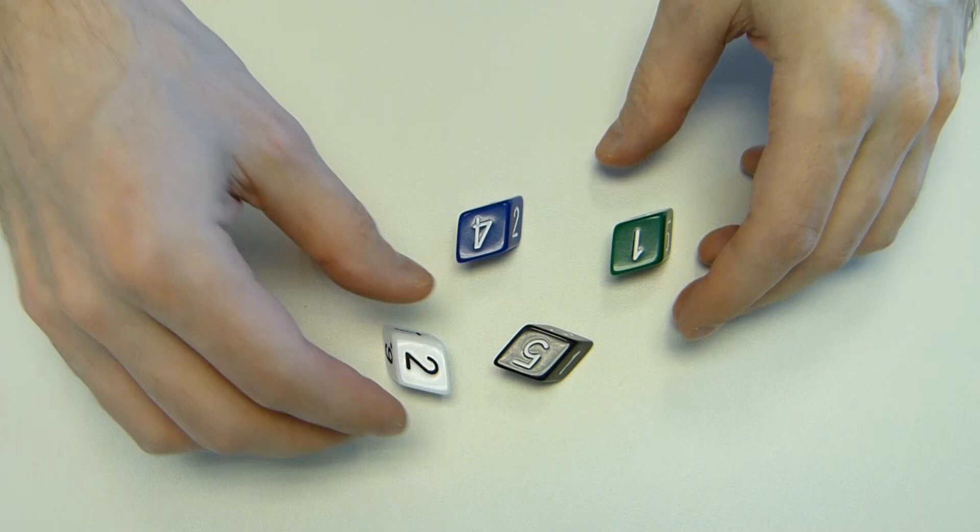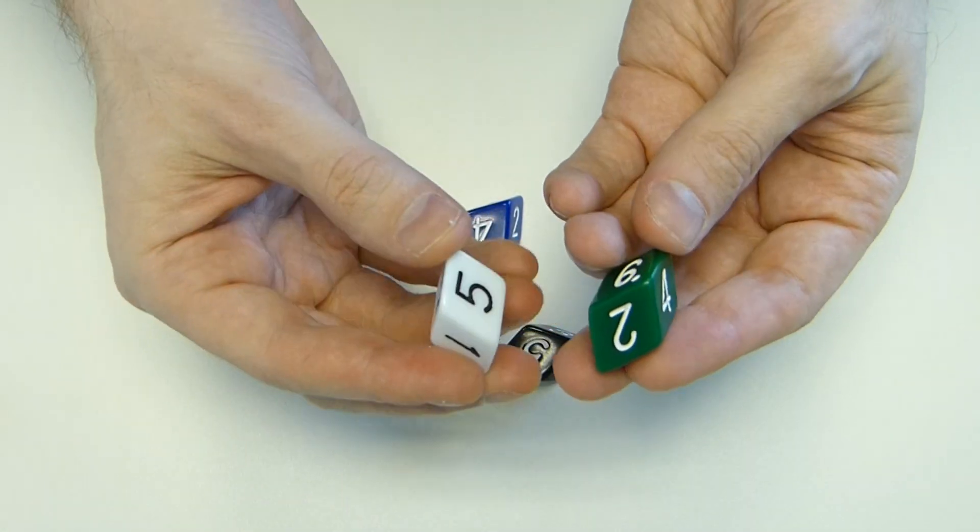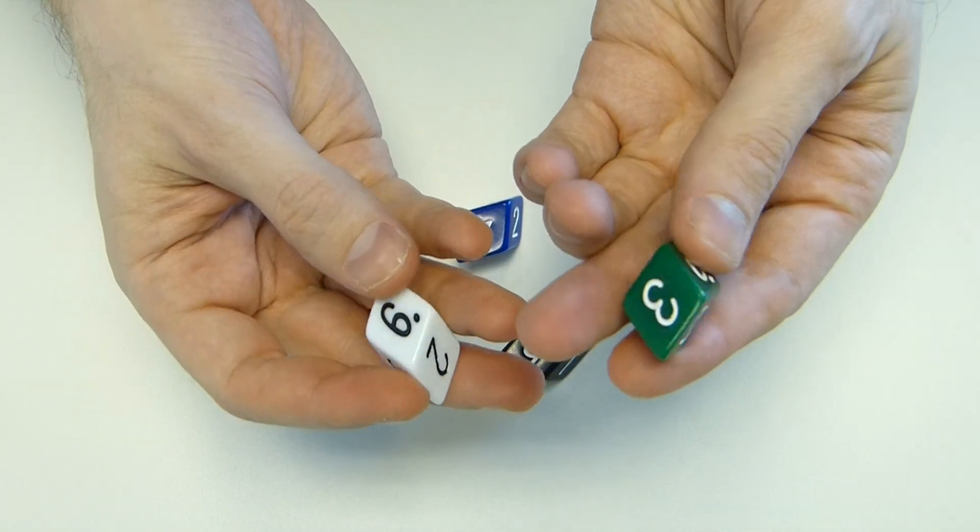Hi, I'm Henry Segerman. These are slant dice by the Dice Lab. The Dice Lab is myself and Robert Fathauer.